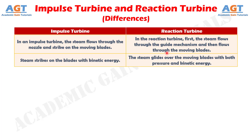Number 2: In impulse turbine, steam strikes on the moving blades with kinetic energy only. But in the reaction turbine, the steam which glides over the moving blades possesses both pressure energy and kinetic energy.